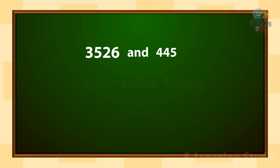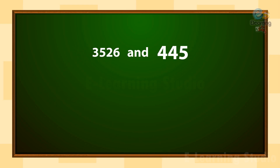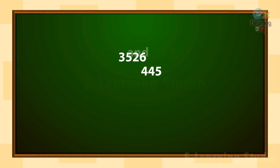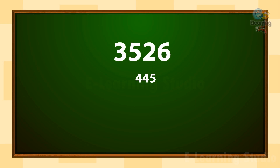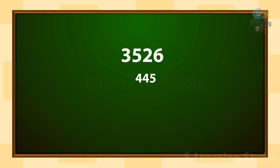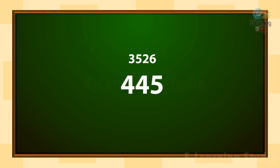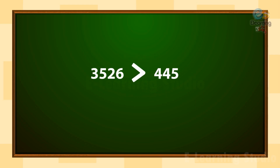Here we have numbers 3526 and 445. First, arrange these numbers in a line. You can see the number 3526 has four digits: 3, 5, 2, 6. And the next number, 445, has only three digits: 4, 4, 5. So children, the number with more digits is always greater. Here, 3526 is greater than 445.